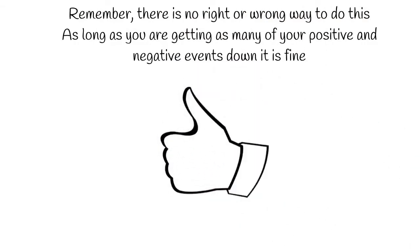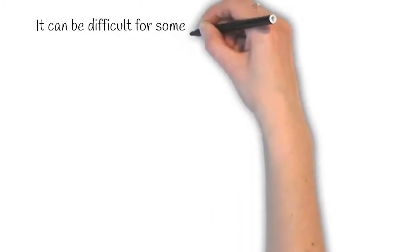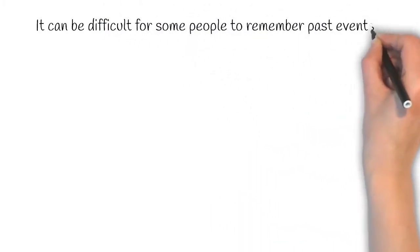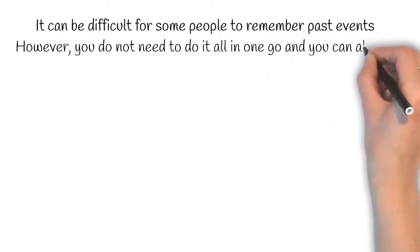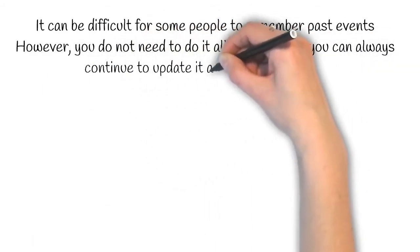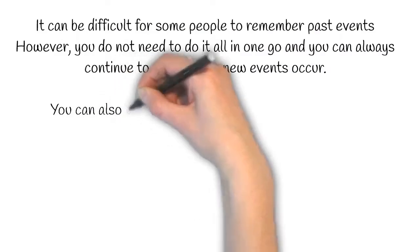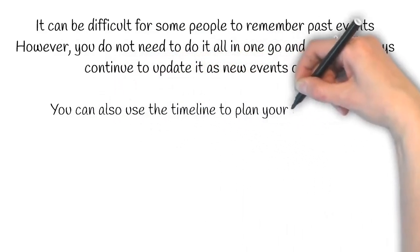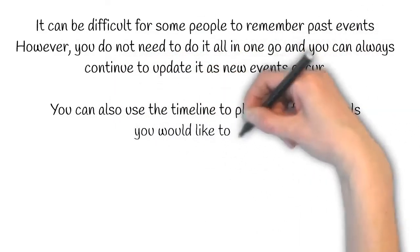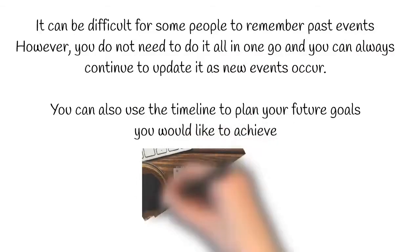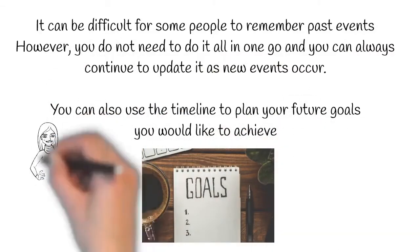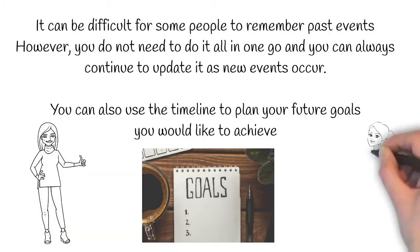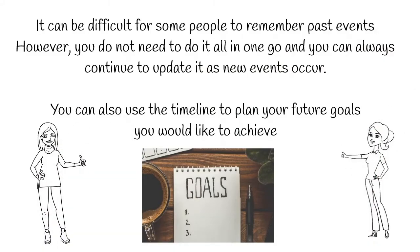It can be difficult for some people to remember past events. However, you do not need to do it all in one go and you can always continue to update it as new events occur. You can also use the timeline to plan your future goals. You can also update your timeline as you do more investigative work around events from your past. Go back and fill in those details as and when you need to.